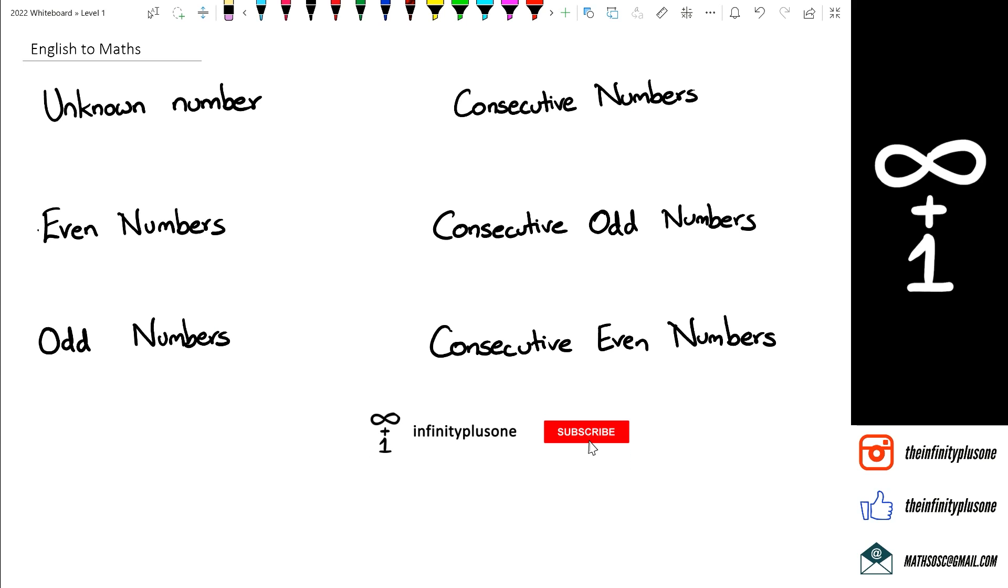So the first thing you want to be knowing is that when you're working with algebraic equations, your unknown number, we don't know what it is, so we always write that down as x.